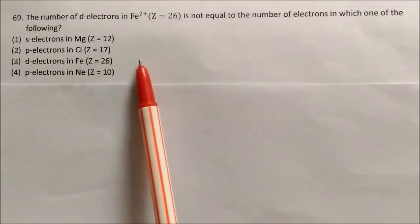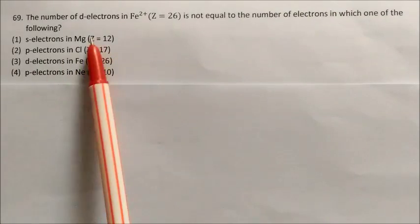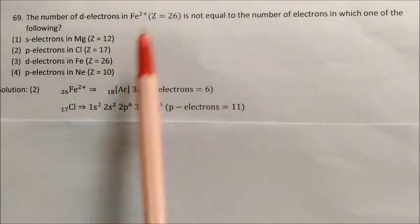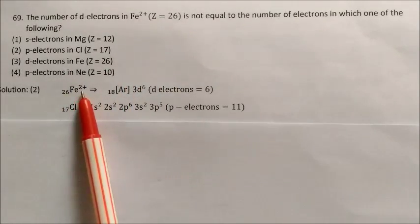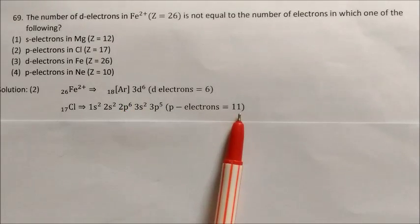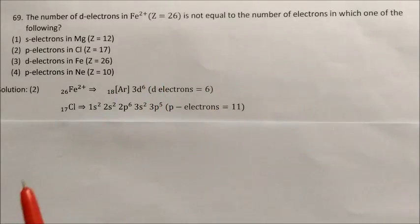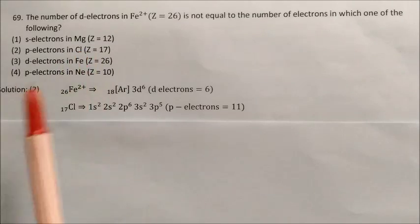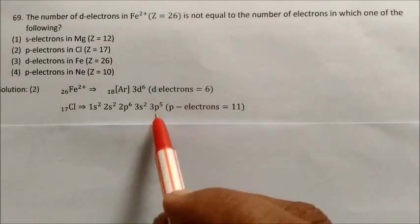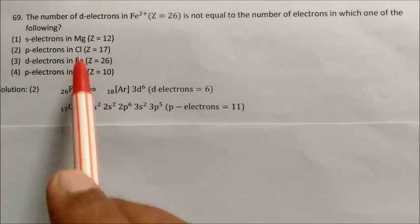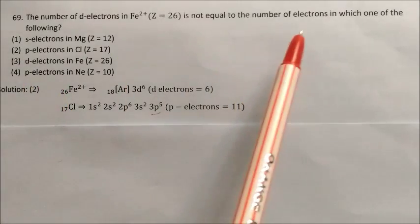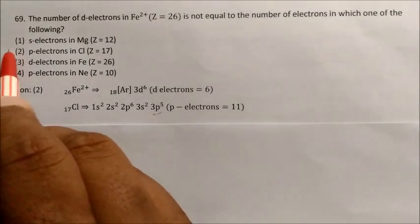Question: The number of d electrons in Fe2+ is NOT equal to the number of electrons in which case? Fe2+ has configuration 3d6, so 6 d electrons. Options: S electrons in Mg, P electrons in Cl, d electrons in Fe, P electrons in Ne. For Cl (Z=17): 3p5 has 5 p electrons — not equal to 6. The other cases (S electrons in Mg = 2, not matching; Fe d electrons = 6, matching; Ne p electrons = 6, matching). P electrons in Cl = 5 ≠ 6. Answer: option 2, P electrons in Cl.